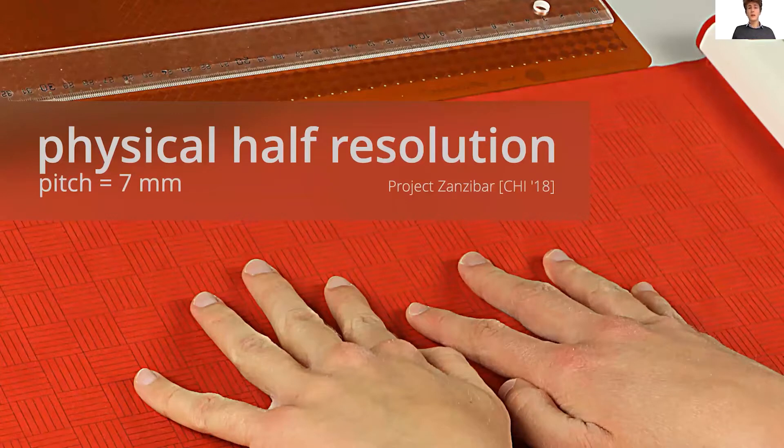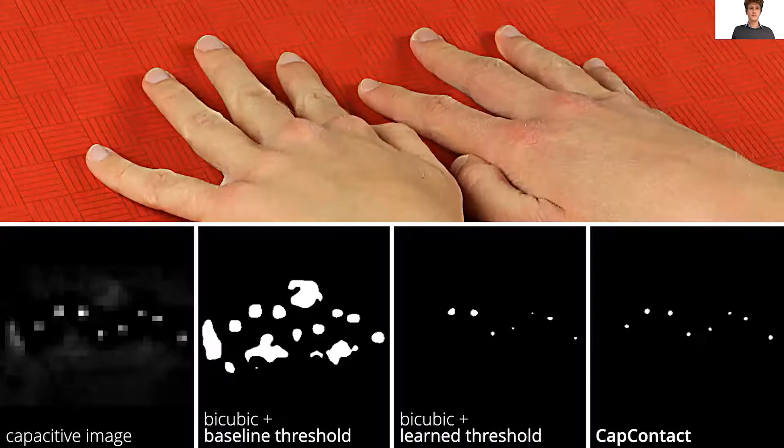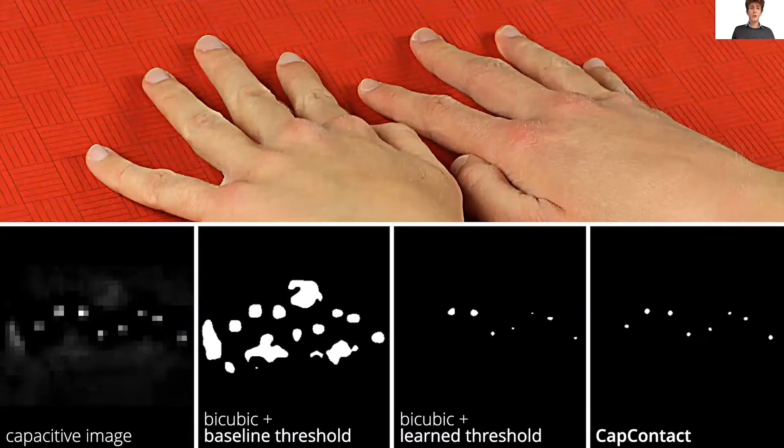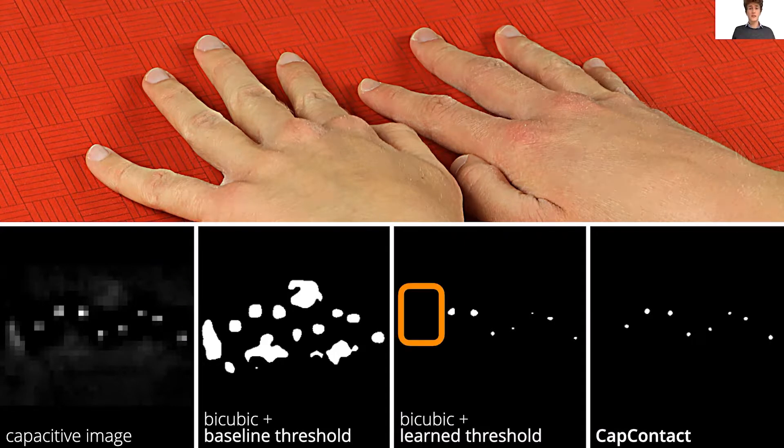To double-check CapContact's capability to work on half-resolution sensors, we ran our network on Project Senseabar, a sensor with a larger grid spacing. Here CapContact robustly detected contact areas even under noisy conditions, successfully rejecting false inputs and solely preserving actual touch contacts. As you can see, the threshold-based method suffers from mis-touches as well as noise due to the flexible surface.